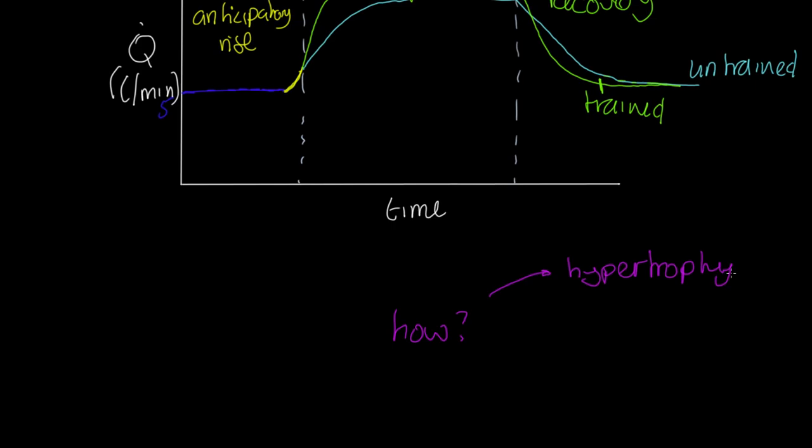First, their left ventricular wall experiences hypertrophy. This means a more powerful contraction of the left ventricle, so stroke volume increases, including at rest.